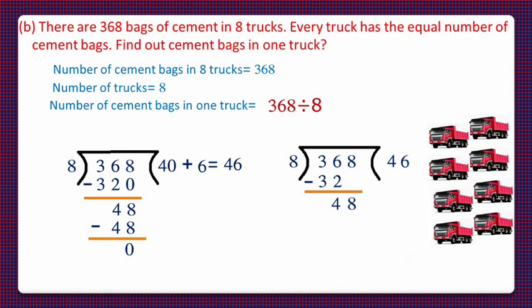So, we will write down 48. Now, 48 minus 48 will get 0 as the remainder. And our quotient is 46. So, 4 tens 40 and 6 for 6 ones. So, the answer is 46 which is equal to our previous answer.